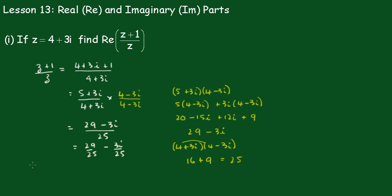So the real part of Z plus 1 over Z is equal to this part here, 29 over 25.